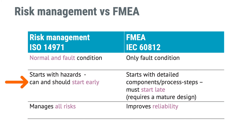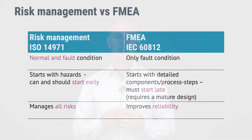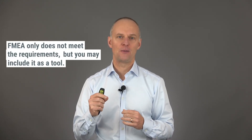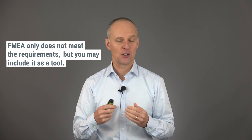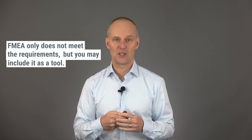ISO 14971 risk management, on the other hand, starts with hazards that can be identified at really early stages in the design life cycle. ISO 14971 will manage all risks from all life cycle phases — both normal use, reasonably foreseeable misuse, and in some cases even abnormal use — whereas FMEA only aims to improve reliability of the design or process. So if you only use FMEA, you do not meet the requirements of the ISO 14971 standard, which in turn usually means you do not meet the requirements of the medical device regulation, nor are you likely to meet the FDA's expectations on risk management in the US.